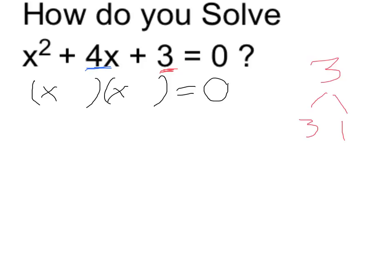So I can factor in the following way, x plus 3 times x plus 1. Now, the x plus 1 could come first because of the commutative property, but either way that works just fine.